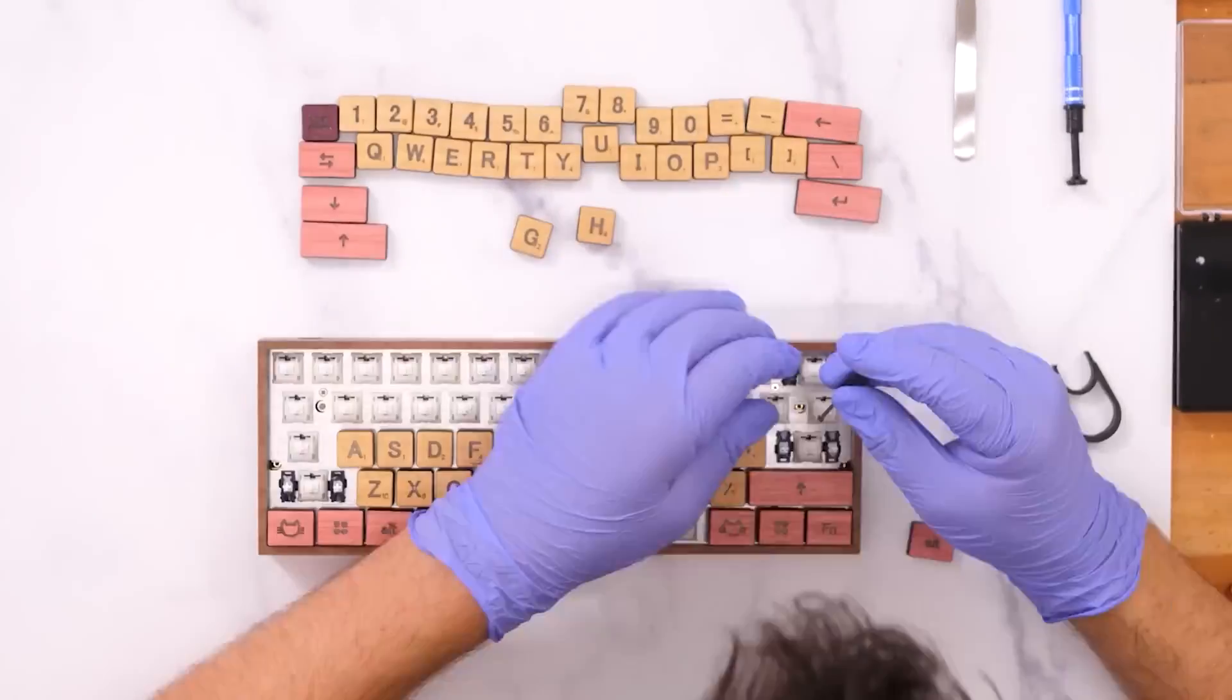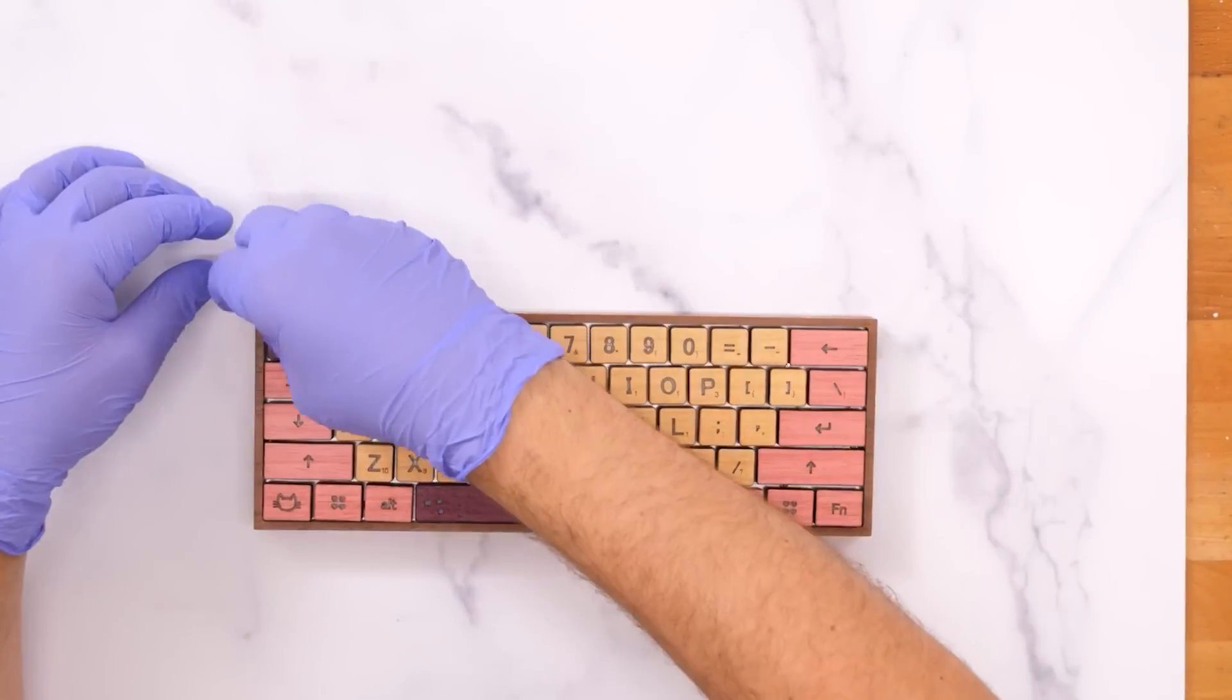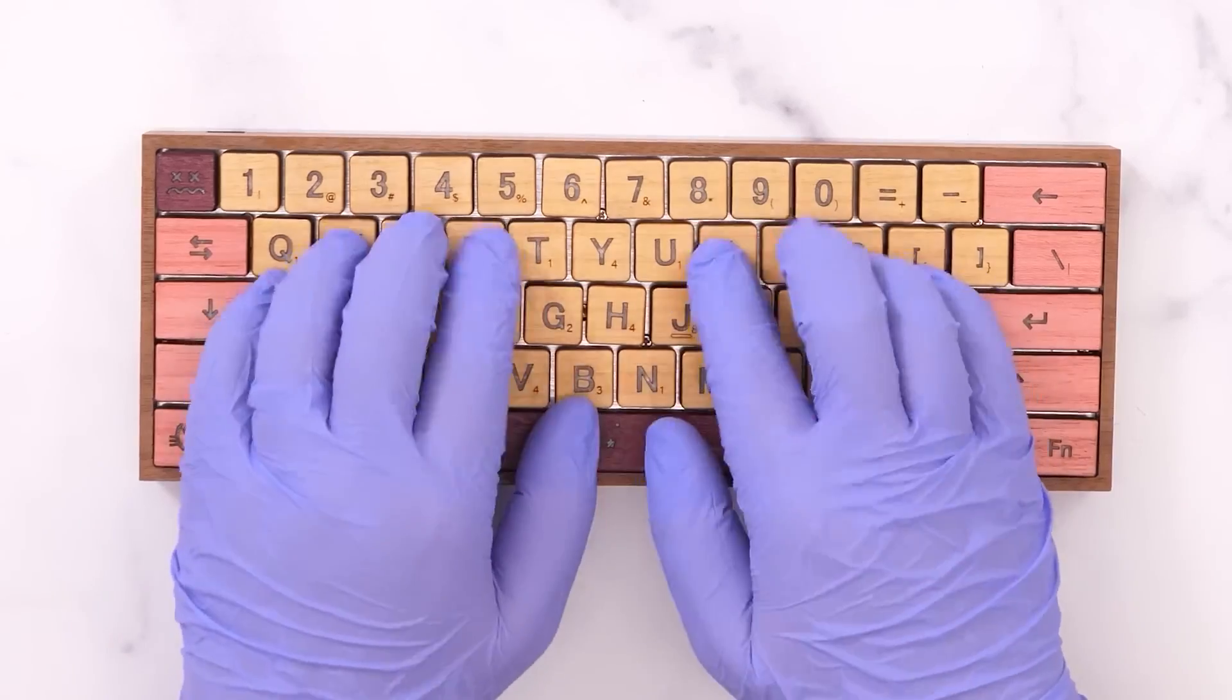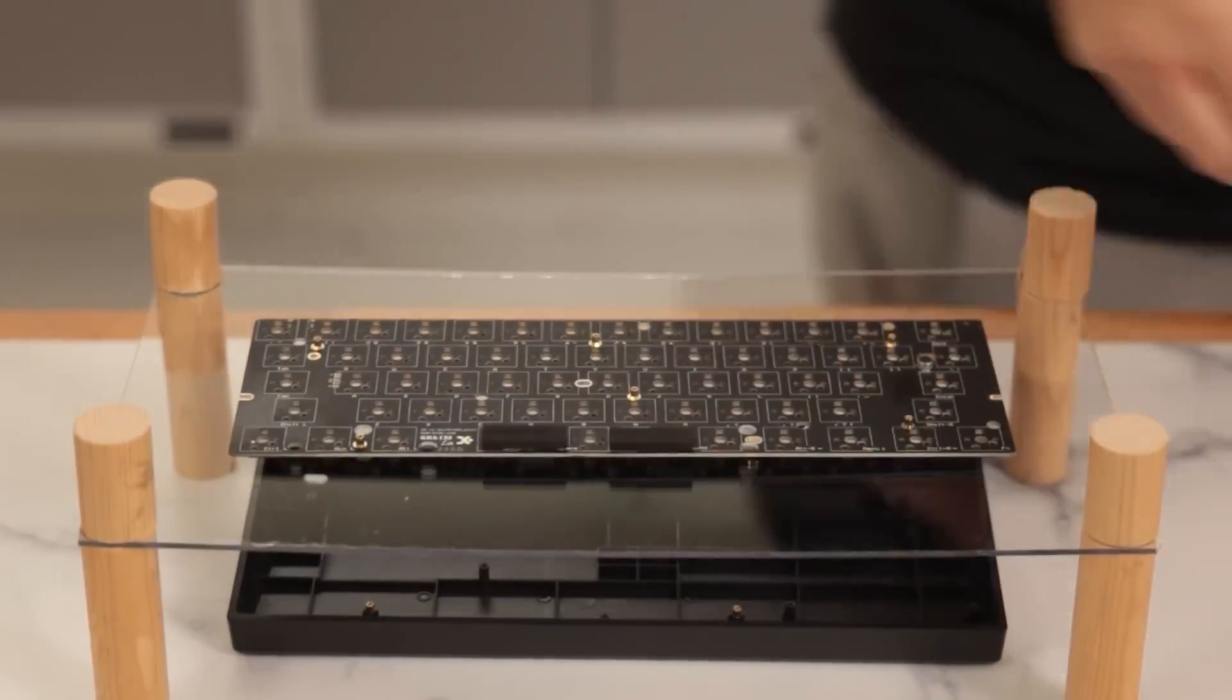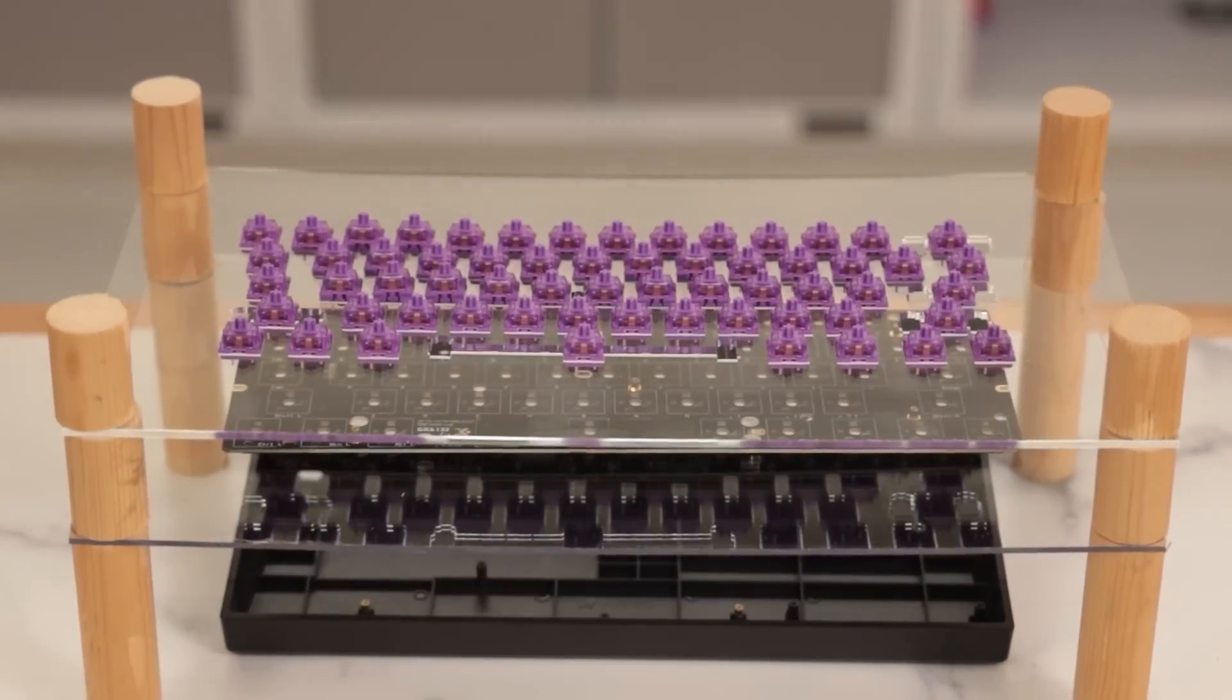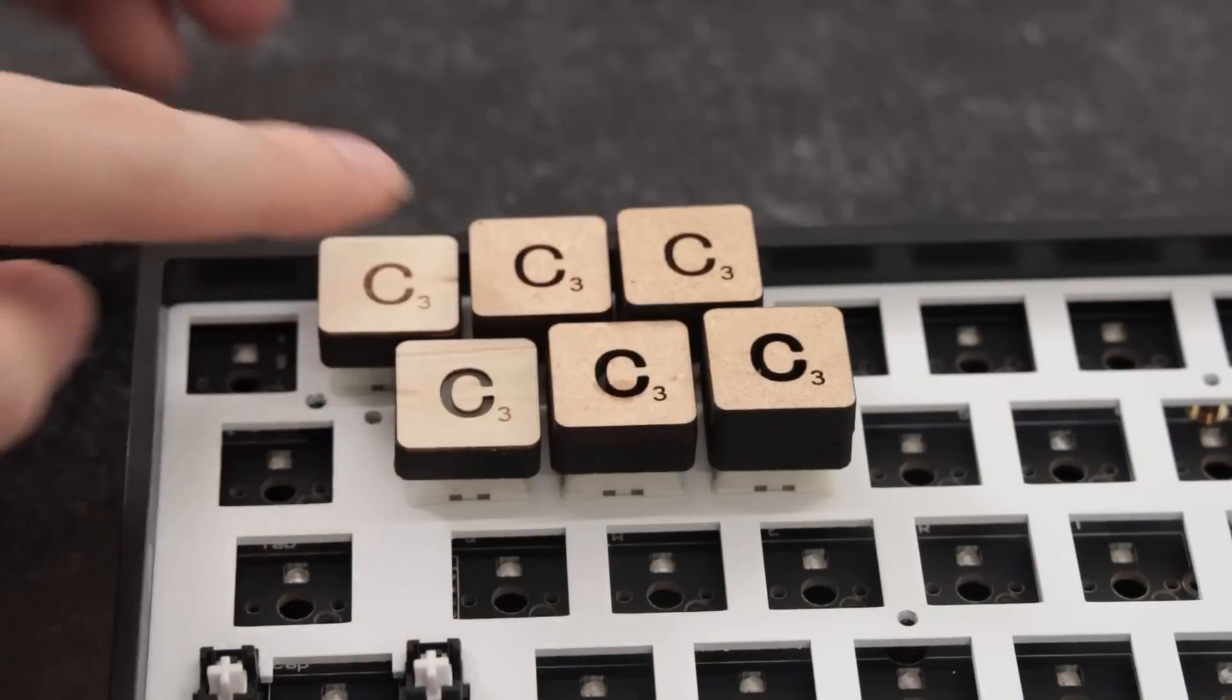Evan and Caitlin just released a video where they made this gorgeous Scrabble-themed wooden mechanical keyboard. The video glosses over all the electronic details about making your own mechanical keyboard, so it's all about customization.